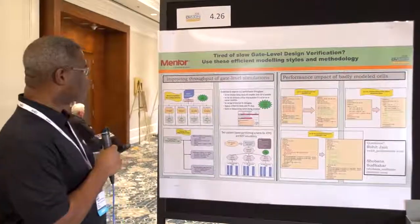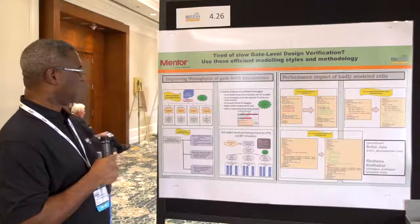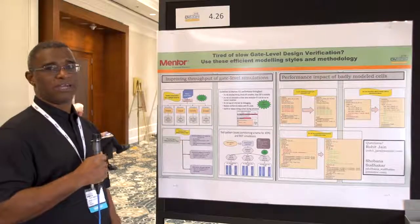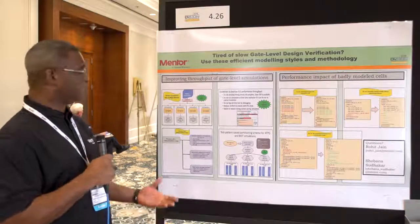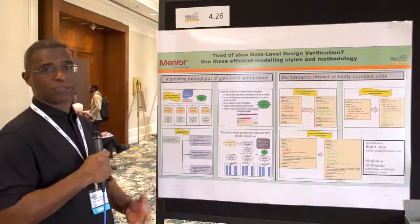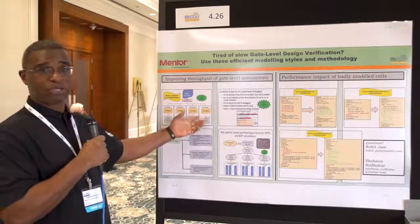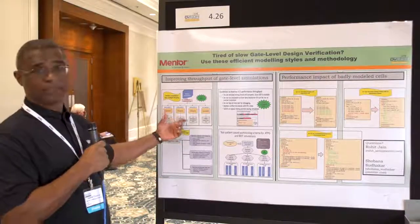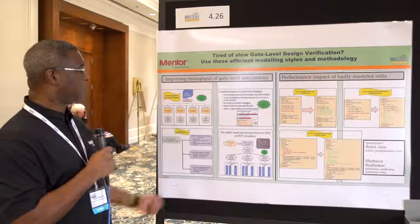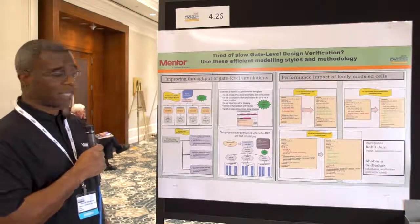Let's take some examples of how to improve the throughput of gate level simulation. Here I'm showing an example where we've taken advantage of parallelism in the design to break up portions of the design and compile those portions in parallel. The gate level libraries could be compiled in parallel, and if there's hierarchy in the design, those can also be compiled independently to get benefits. We applied this technique on a design that gave us about 4.6x improvement.